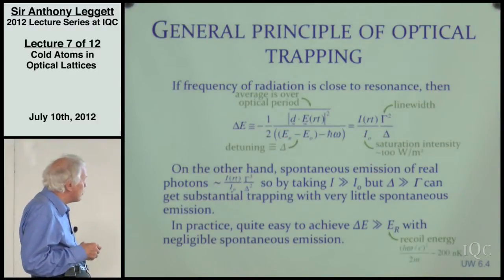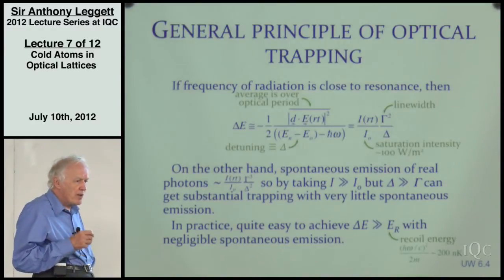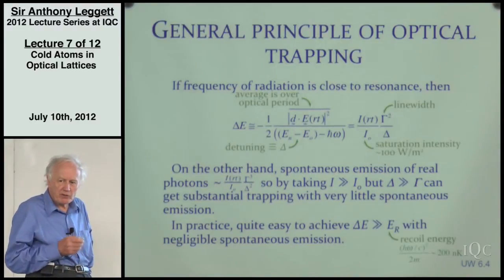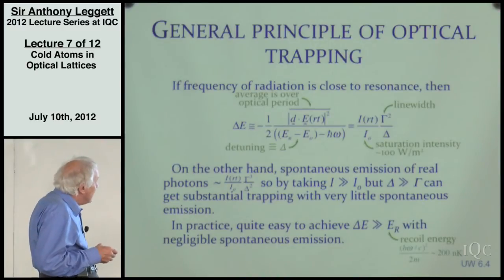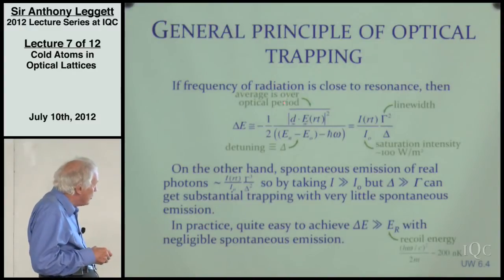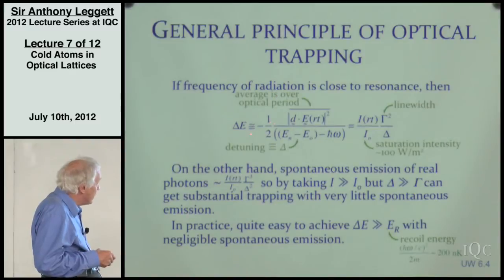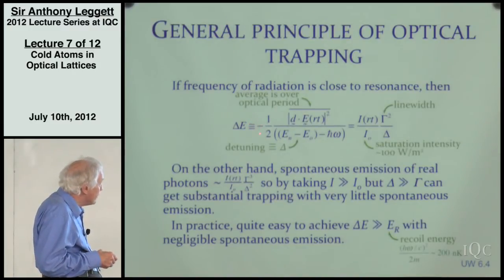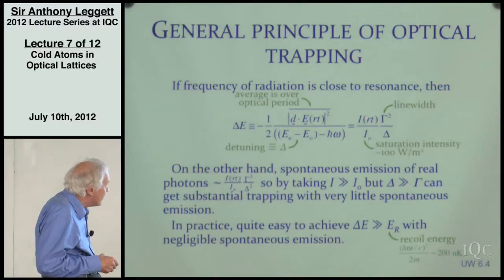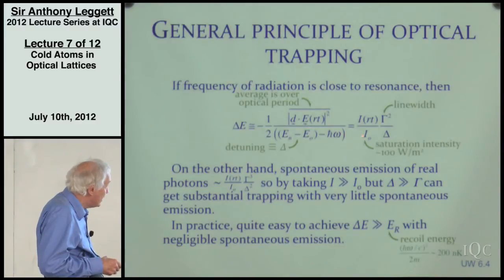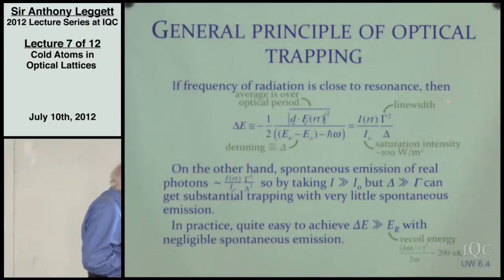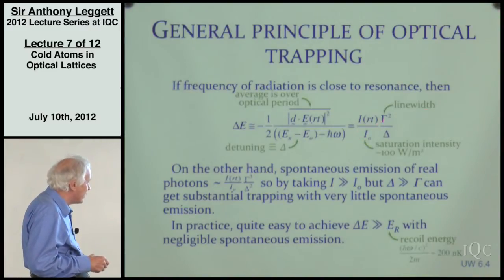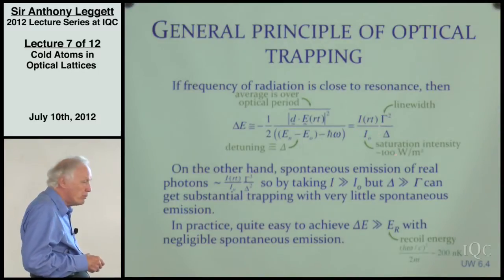The general principle of optical trapping goes like this. Assume for simplicity you have one state in the NS manifold and one in the NP manifold. If the frequency of the radiation is close to the NS-NP resonance, then effectively you polarize your atom and thereby induce an energy shift in the ground state. The energy shift can be written as the intensity of the radiation field E-squared times some factor I₀, times the line width gamma-squared divided by delta.